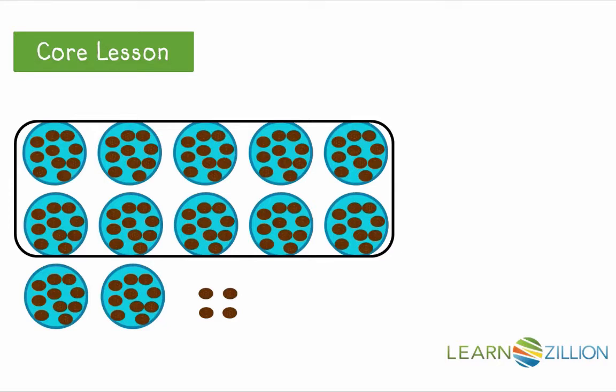Let's count the cookies. We will start with 100, 100. The next group is a group of tens, so we will count from 100 by tens. That makes 110. And then another group of 10 makes 120. Then we have four individual cookies. So we will count on from 120 by ones. 121, 122, 123, 124. We have 124 cookies.